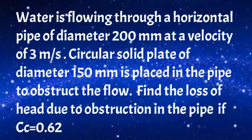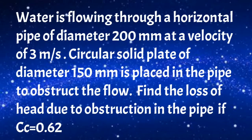First I will read the given problem. Water is flowing through a horizontal pipe of diameter 200 millimeters at a velocity of 3 meters per second. A circular solid plate of diameter 150 millimeters is placed in the pipe to obstruct the flow.